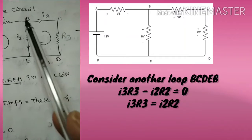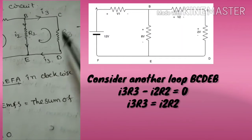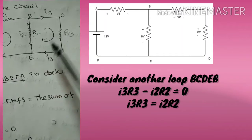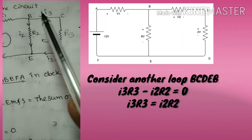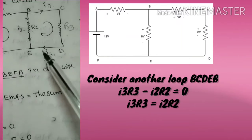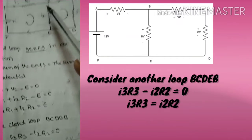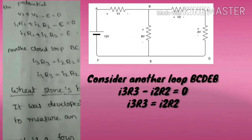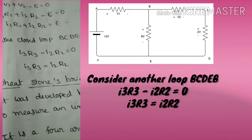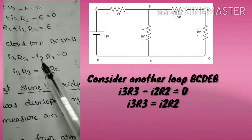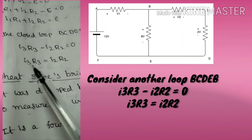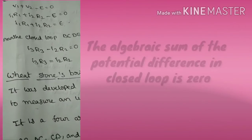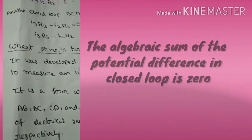For the second loop b-c-d-e, there is no battery. Taking the clockwise direction as positive: i3·r3 − i2·r2 = 0, which gives i3·r3 = i2·r2. This confirms that the algebraic sum of the potential differences in a closed loop is zero.